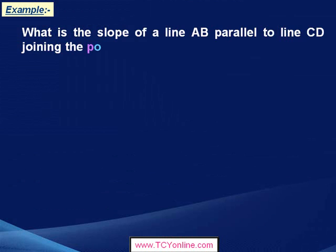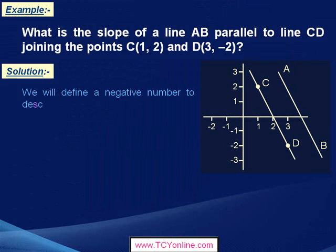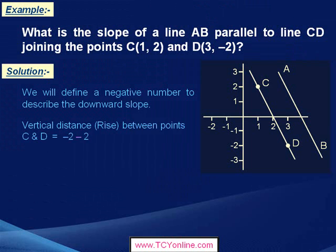Now, look at this example. Here, we need to find the slope of line AB which is parallel to line CD, joining points C having coordinates 1, 2 and D having coordinates 3, negative 2. For this, first look at this figure. We take a negative number to describe a downward slope. First, find the vertical distance — that is rise — between two points C and D, which is simply negative 2 minus 2, which equals negative 4.